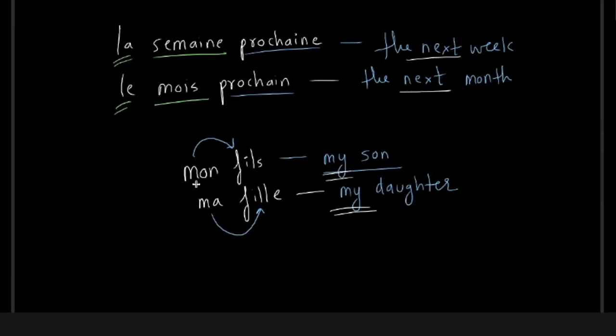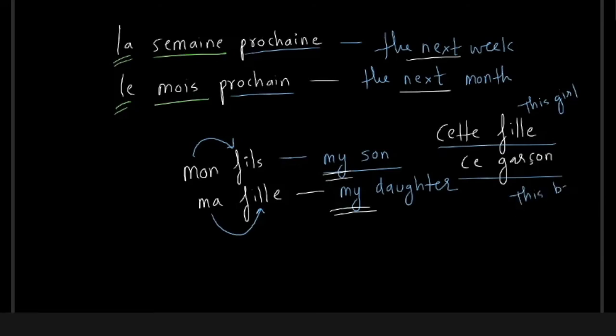Knowing the gender of a noun in French is important because we're going to use these other constructions like adjectives, like descriptive adjectives, or this possessive adjective, or we have another terminology called demonstrative adjective. For example, this girl and this boy. Cette fille, this girl, yes.